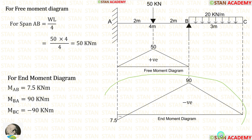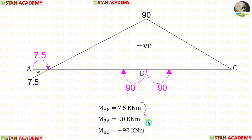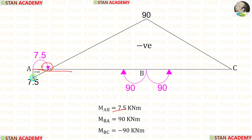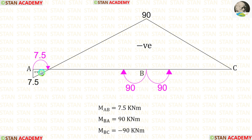Now let us see how to make the end moment diagram using the calculated end moments. For MAB, the positive value means it acts clockwise. For MBA, the positive value also means clockwise. For MBC, the negative value means it acts anti-clockwise. The arrow for MAB indicates downwards, so we mark 7.5 below the line. The arrows for MBA and MBC indicate upwards, so we mark those points above the line. If the end moment diagram comes above the line, that is negative; below the line is positive.